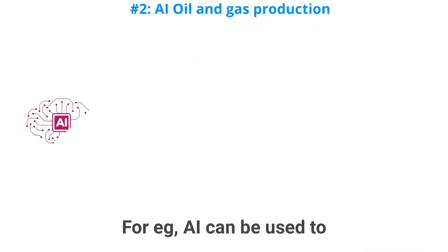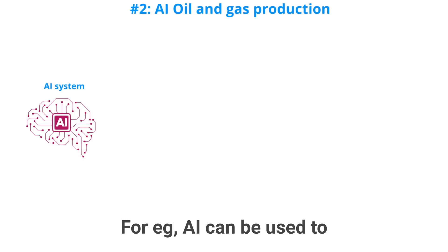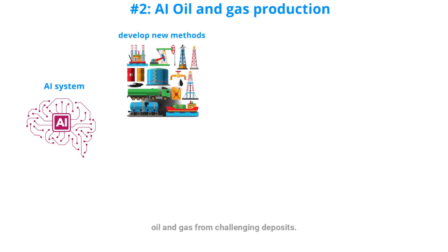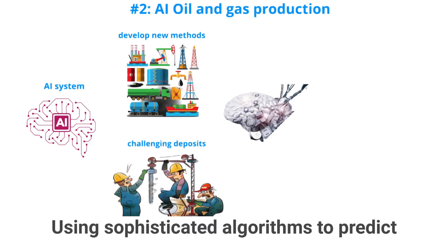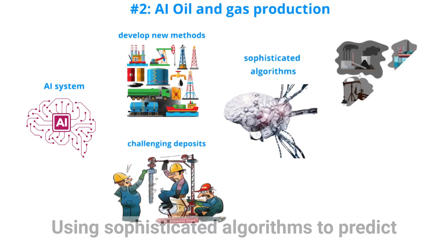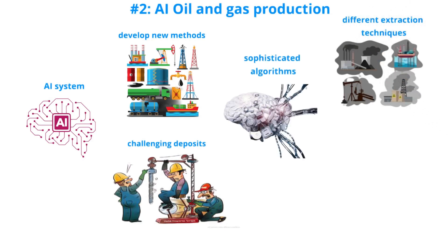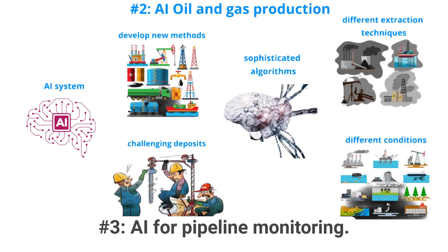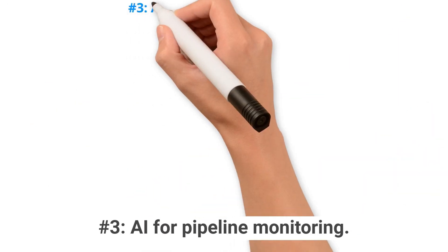Number two: AI for gas and oil production. For example, AI can be used to develop new methods for extracting oil and gas from challenging deposits, using sophisticated algorithms to predict how different extraction techniques will perform under different conditions.